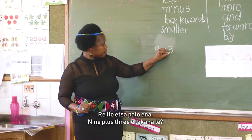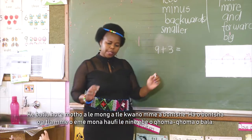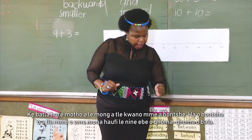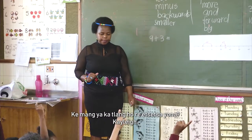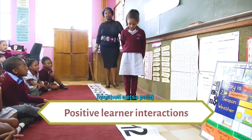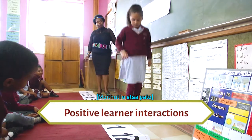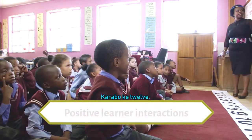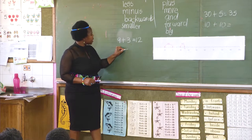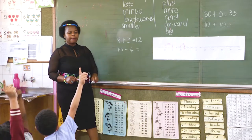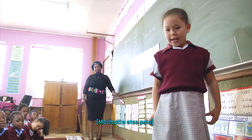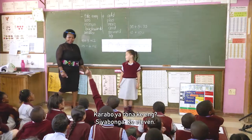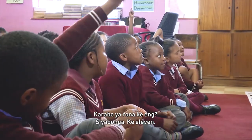We are going to do the sum: nine plus three. I want one person to come here and plot — come and stand by nine, then make hops counting forward. I'm standing on nine and I'm going to jump three jumps: one, two, three. What's the answer, class? 12. Next: 15 minus 4. I'm standing on 15 and I jump four numbers backwards: one, two, three, four. What is our answer? 11.